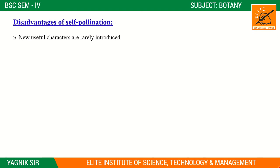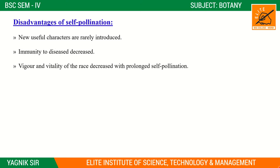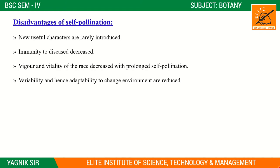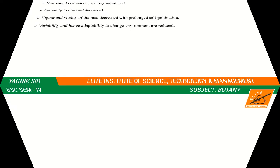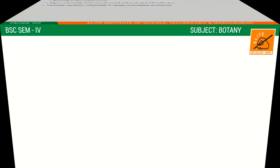Self pollination ensures seed production. Self pollination eliminates bad recessive characteristics. Now, what are the disadvantages of self pollination?